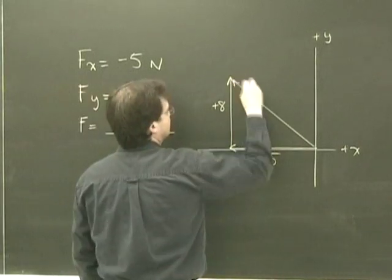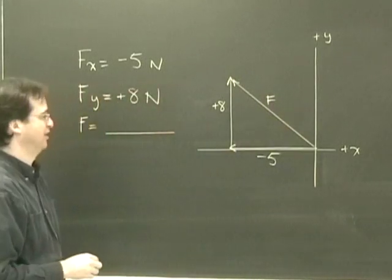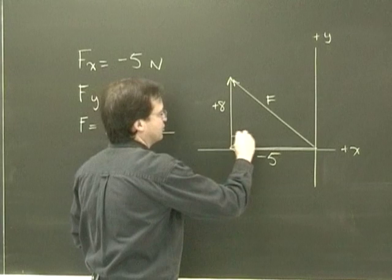So this is start to finish. This is my original vector, and now I want to calculate. The way I calculate it is it's a right-angled triangle, so I can use Pythagoras.